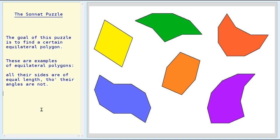This is a slightly mathematical problem and the goal of this puzzle is to find a certain equilateral polygon. These are examples of equilateral polygons. All their sides are of equal length, although the angles might not be.